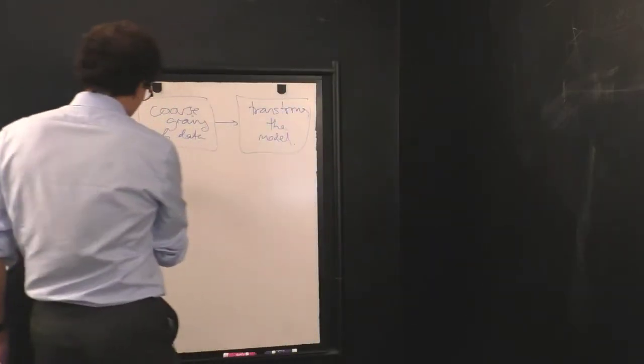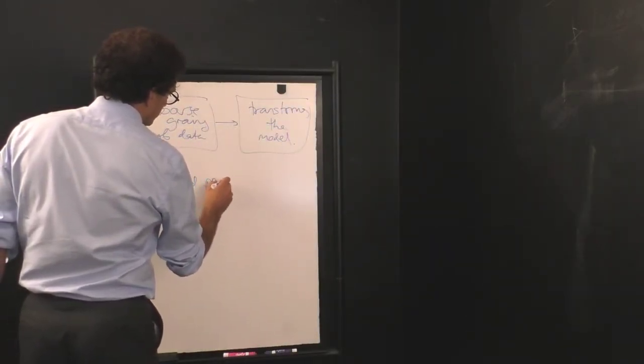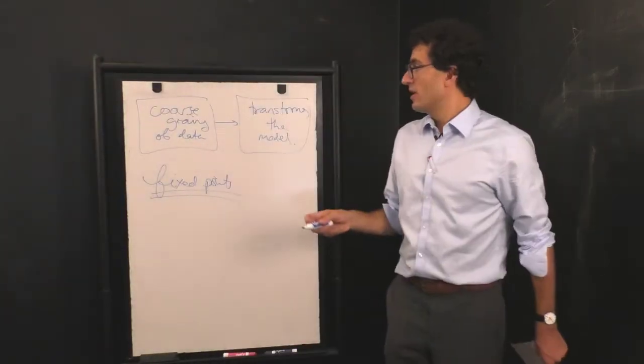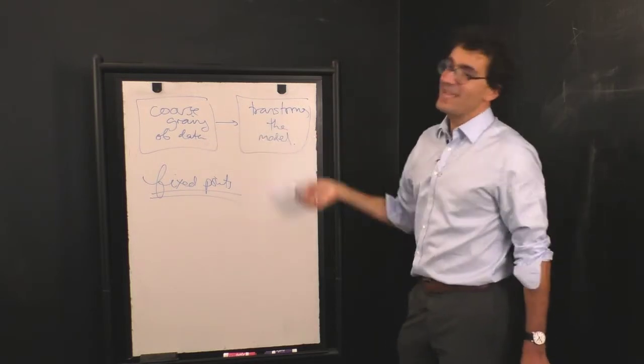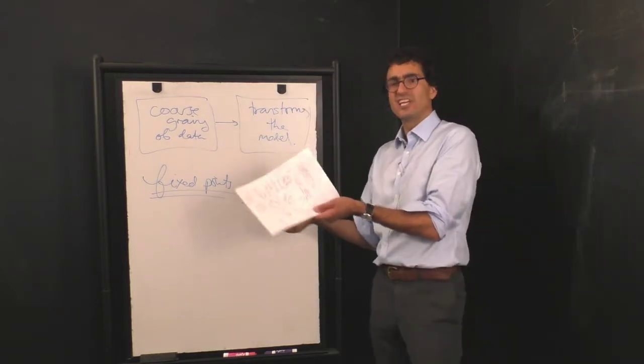One of the big things that you learned or encountered for the first time was the idea of fixed points. A fixed point is a model such that when you coarse grain the data and you ask how the model transformed, you get back the original model. If you simplify the data, the model doesn't change.